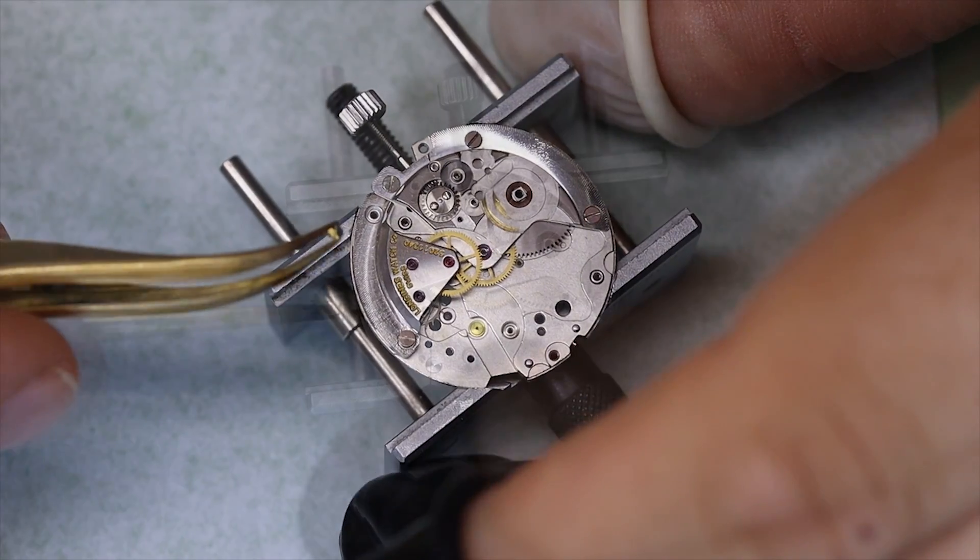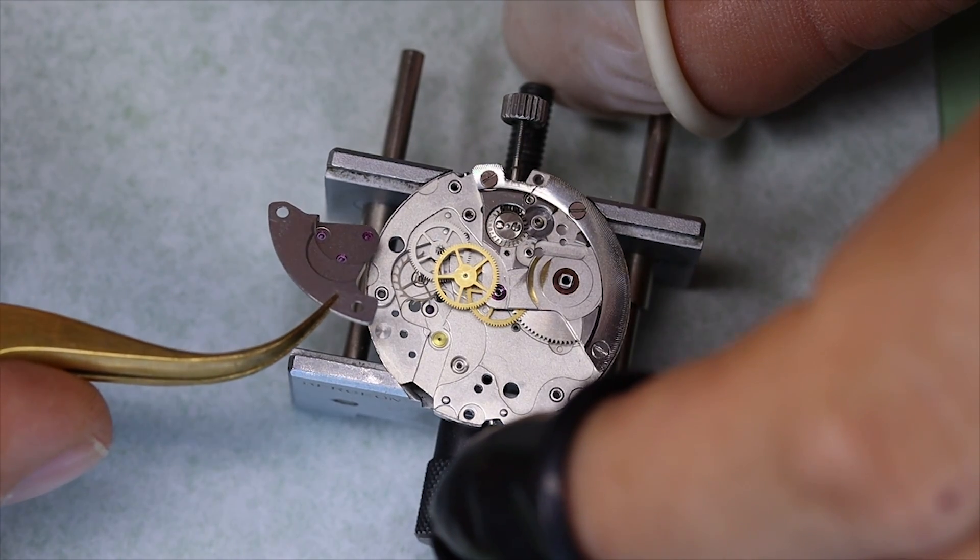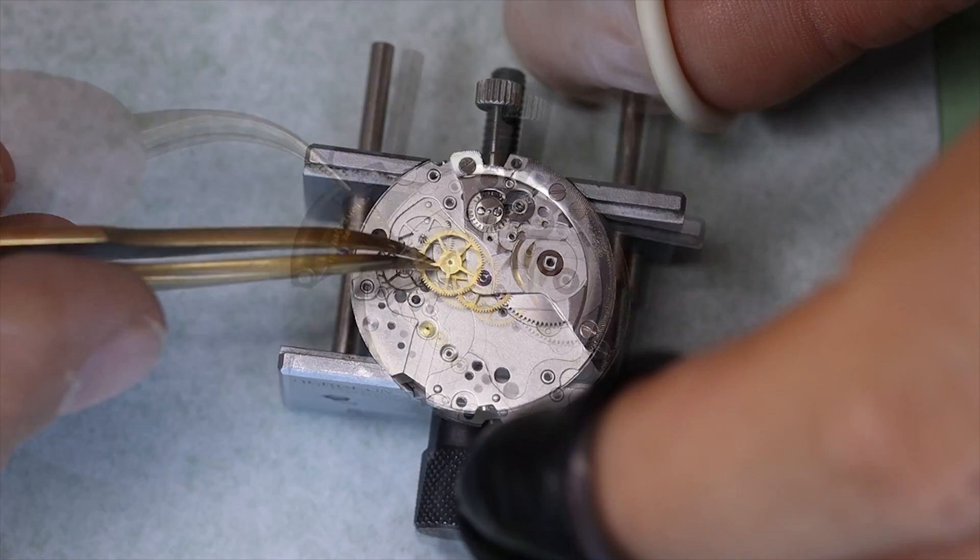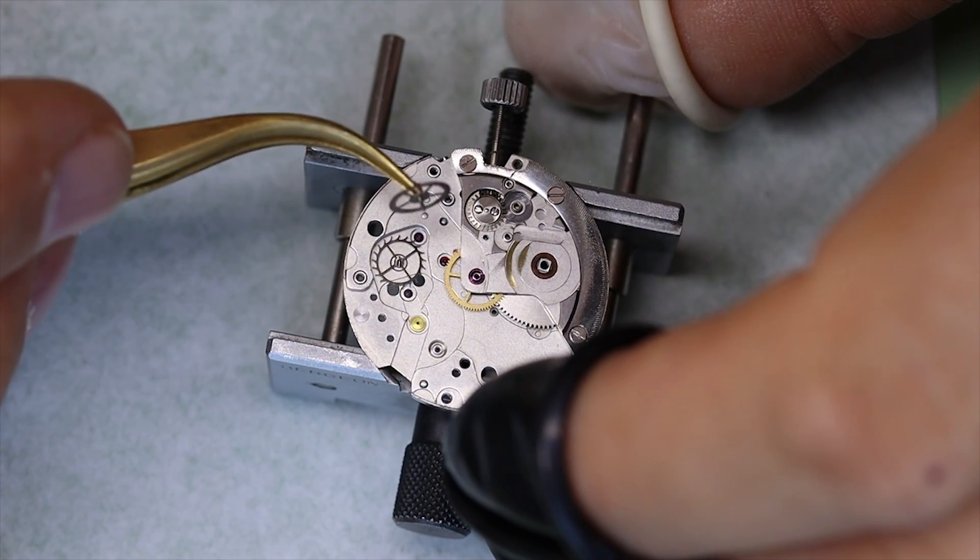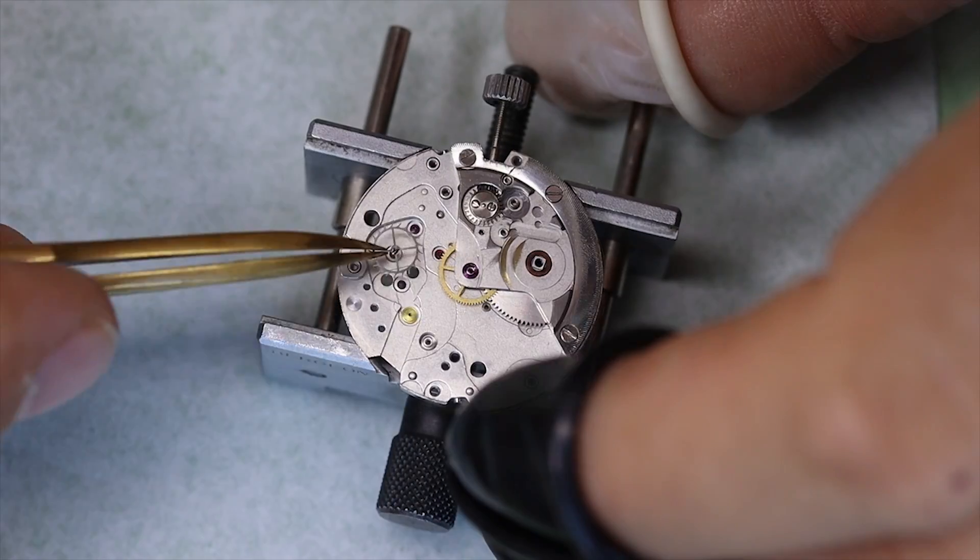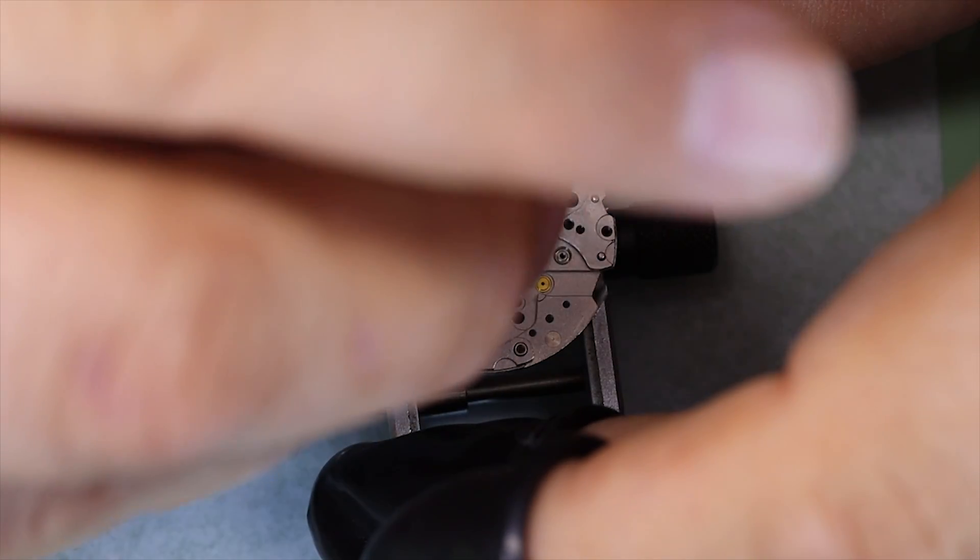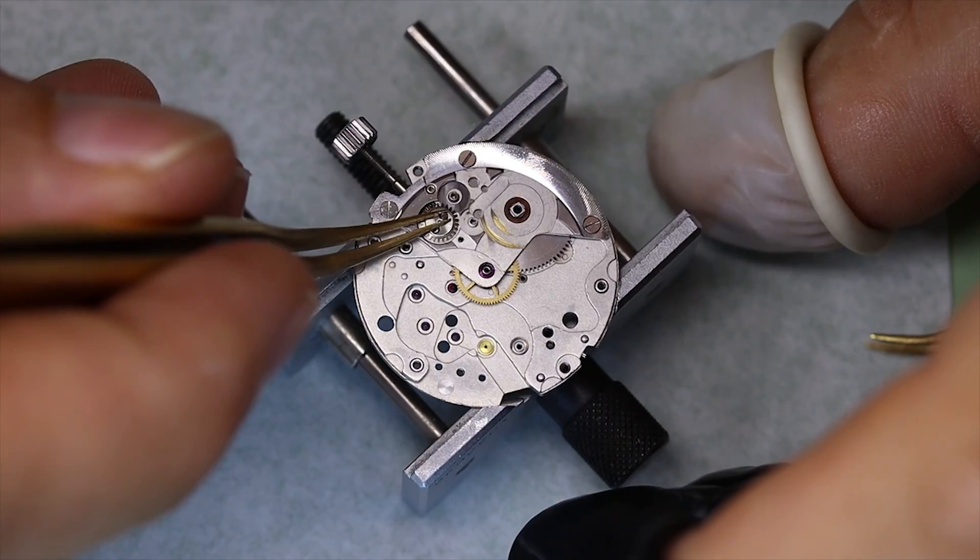For the fault finding in general, of course we start that before we pick the watch apart, check all the functions, time graph and so forth. And during disassembly we inspect each part to see if anything's strange, like this fourth wheel. It is actually how it's supposed to be but it looks out of place. But we look at all parts to see if there's any damage, wear and so forth.